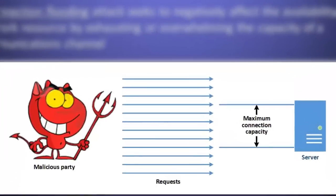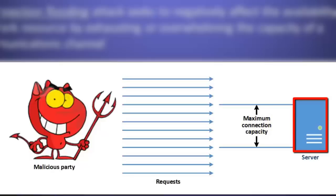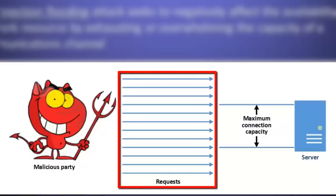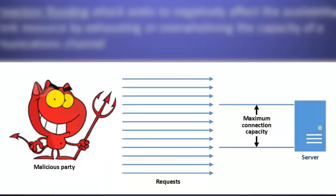The figure shown here illustrates the generic principles underlying the various types of connection flooding attacks. The communications link which connects the target server to the rest of the network has a maximum information carrying capacity. Similarly, the server itself has a maximum information processing capacity. A connection flooding attack works by simply overwhelming the communications channel or the server by sending it more requests than it is physically or computationally capable of handling. With so many malicious requests being directed toward the server, requests from legitimate users cannot be handled in a timely fashion, if at all.